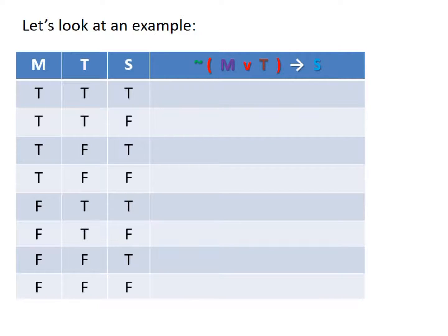Here are the eight lines. On the left, we've done the same as in the less complex truth table but with an extra level. We start off with all the trues and all the falses together for statement M — four of each. Then we split statement T: for the trues in M, we have true, true, false, false. So there are two times when you have true-true for M and T, and two times when you have true-false for M and T. Then in the bottom half, we repeat that with the four false rows for M.